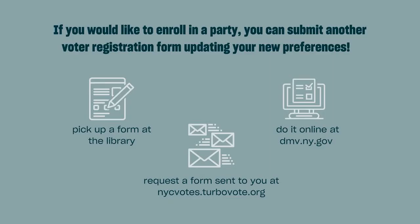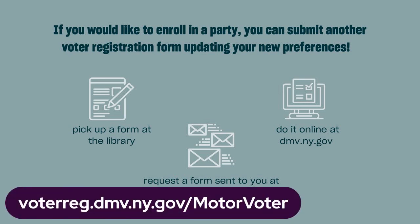If you would like to enroll in a party, update your party, update your address, or make any other changes, you can fill out a voter registration form. And it's okay if you are already a registered voter — we all need to file this voter registration form to make changes. You can pick up a form at a local library, submit one online via the New York State Department of Motor Vehicles website, or request a form be mailed to you at nycvotes.turbovote.org.